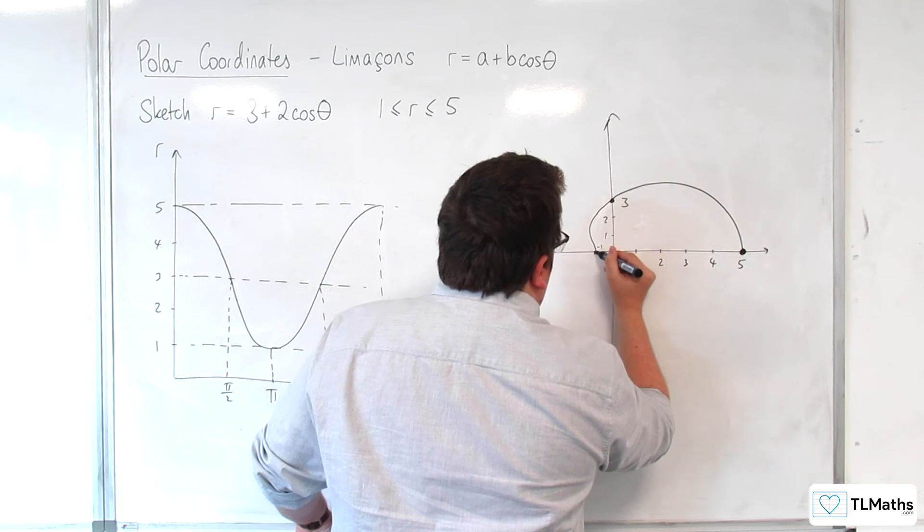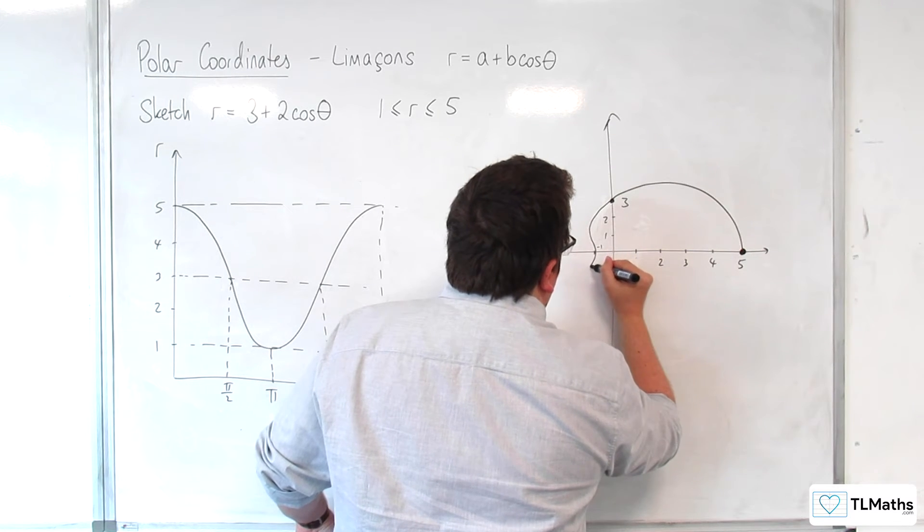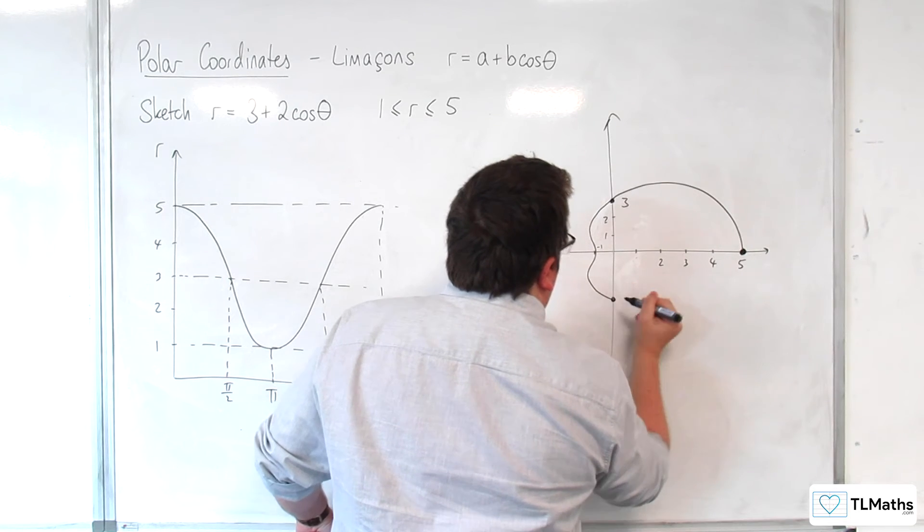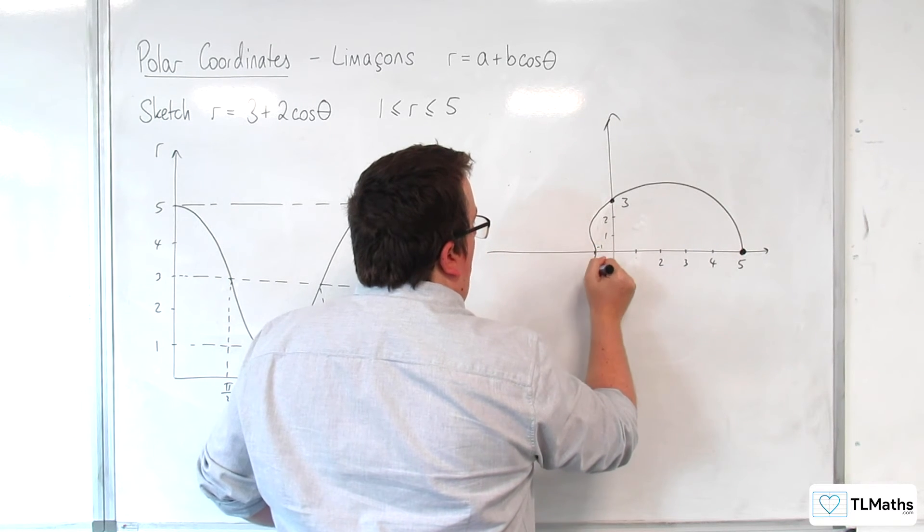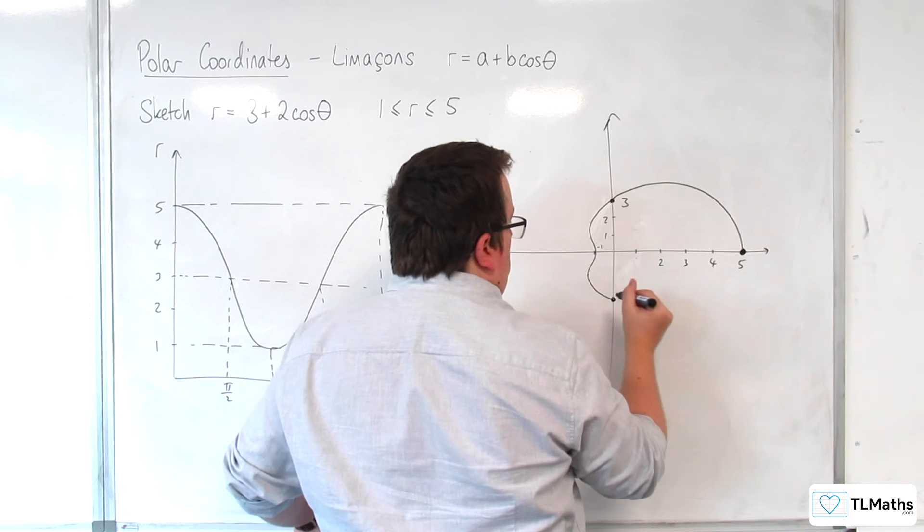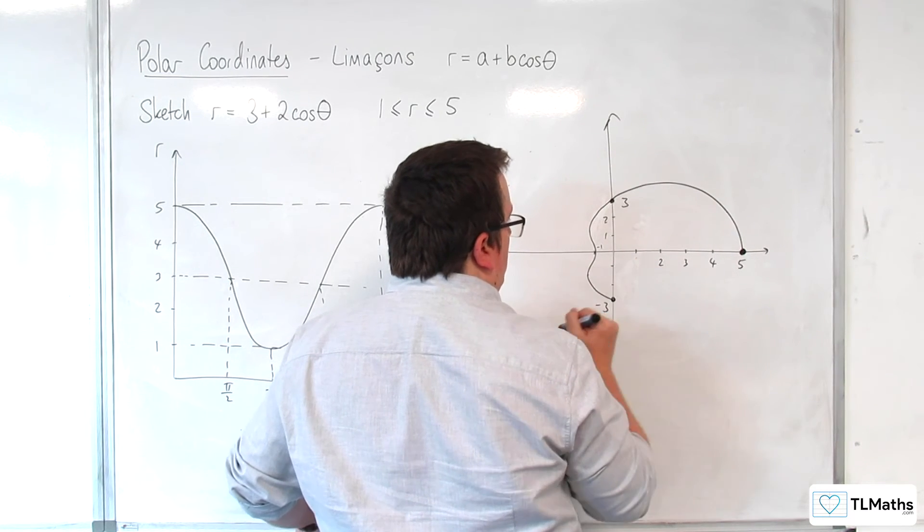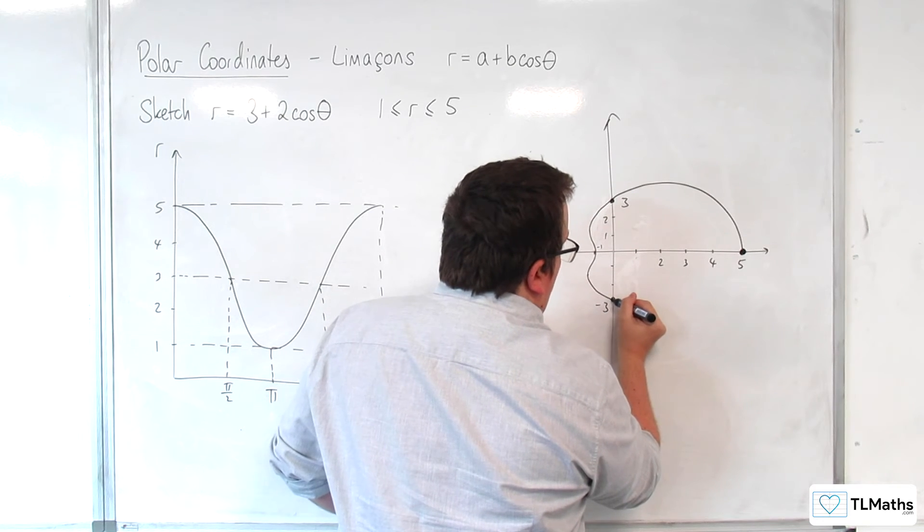And then it's going to come out again, symmetric because it's symmetric, come around. So this point here, 1, 2, 3, and 4. So this is at minus 3.